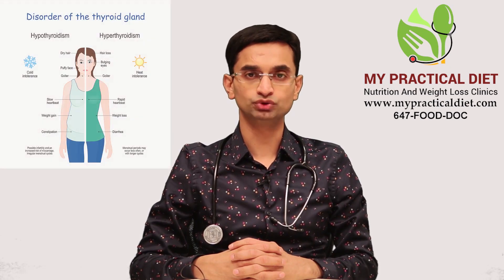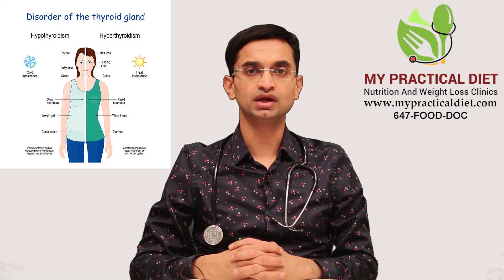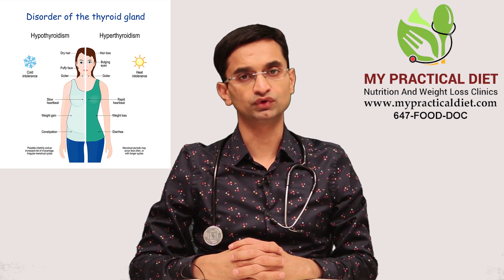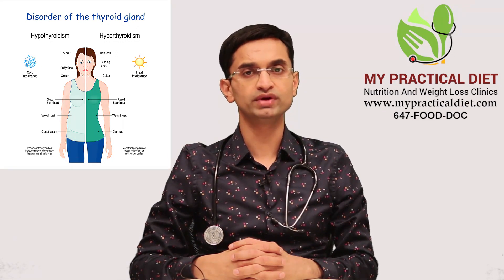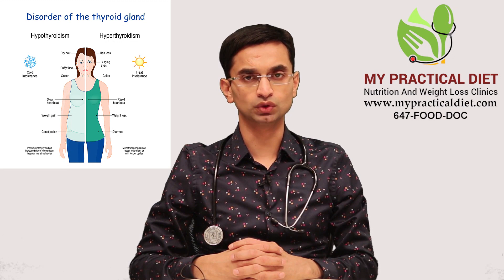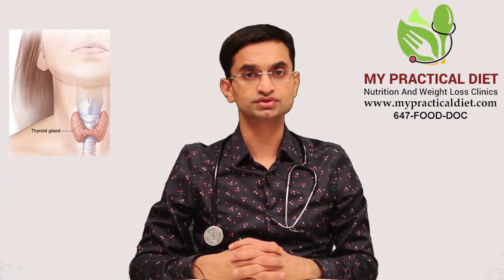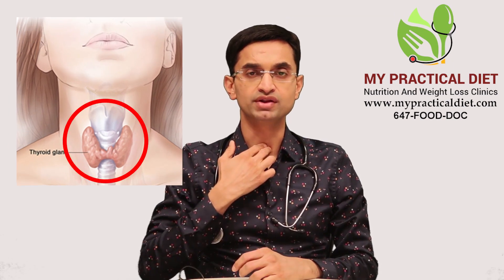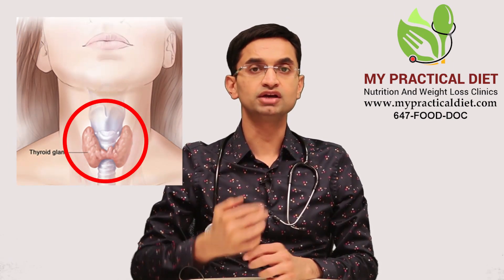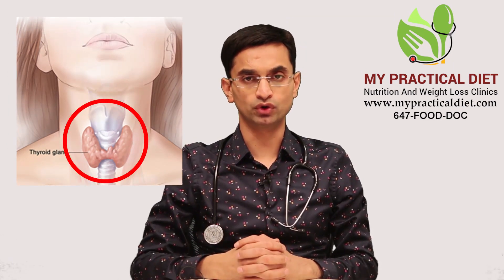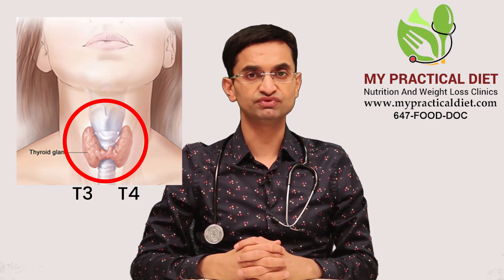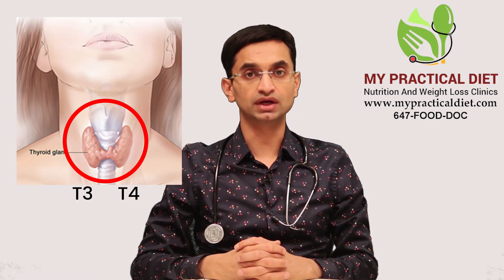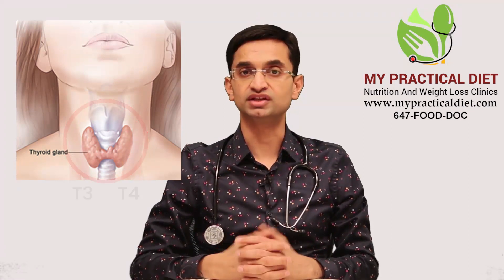There are two main organs which work together to control our thyroid function. The first organ is the thyroid gland, which is in the middle of the neck in the front. It makes thyroid hormones, also known as T4 and T3, which regulate our body's metabolism.